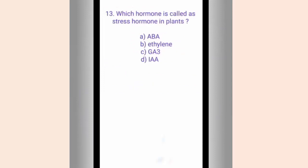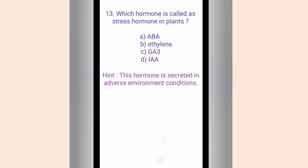Question thirteen. Which hormone is called the stress hormone in plants? The options are A. ABA, B. Ethylene, C. GA3, D. IAA. The hint is this hormone is secreted in adverse environmental conditions. The answer is ABA. ABA increases the tolerance of plants towards various stress conditions, for example dry and drought conditions.